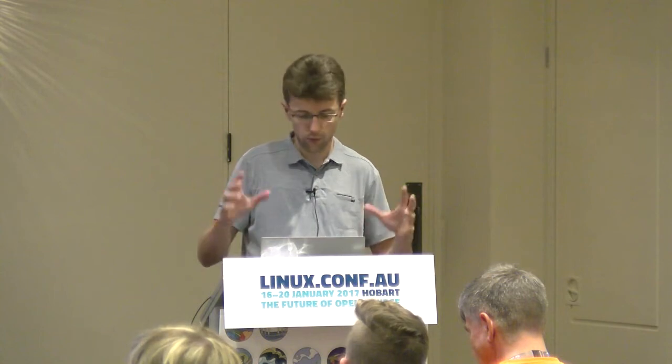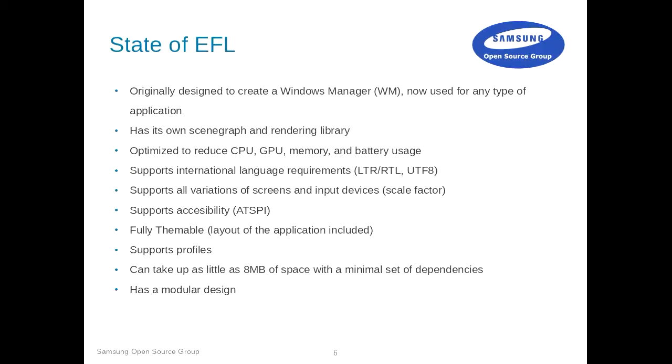The minimal set of dependencies needed for an embedded device is 8 megabytes of flash — without the theme, because the biggest consumer of disk space is usually the images in your theme. If you have a simple UI you can fit into smaller space. We have a very modular design where you can remove components to optimize for your target.